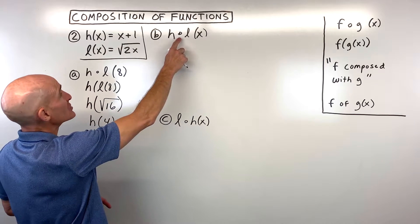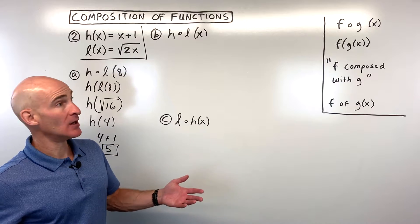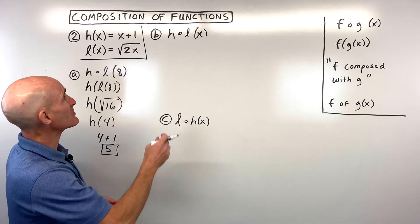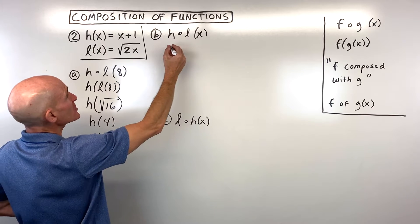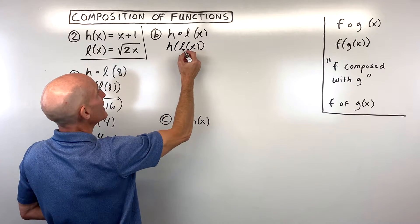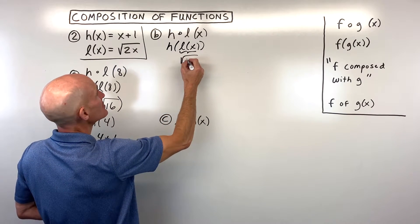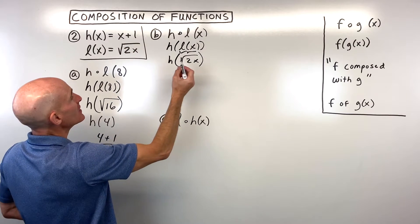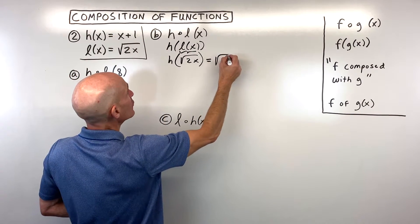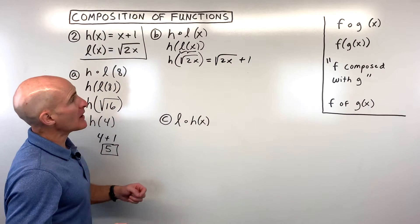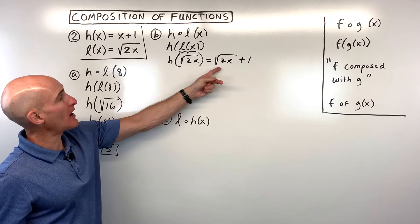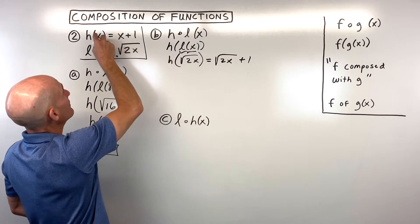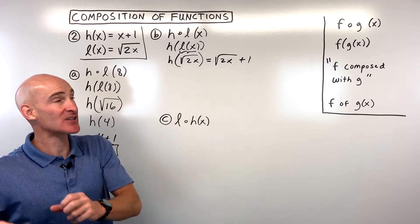Now for h of l of x — here we don't know what x is; we're writing a generic composition function. I'd start by rewriting this as h of l of x. My l function is the square root of 2x, so I replace l of x with that. Whatever's in parentheses goes in for x on the right, so I'm replacing x with the square root of 2x, giving square root of 2x plus 1. The x in h gets replaced by whatever's in the parentheses — it's not multiplication.